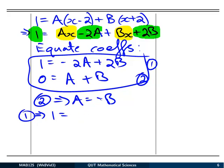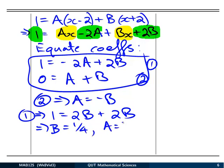In other words, 4B is equal to 1, so B is equal to a quarter. And if B is a quarter, then A must be minus a quarter.